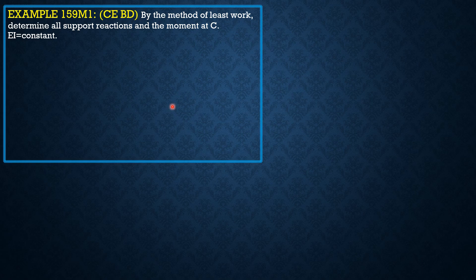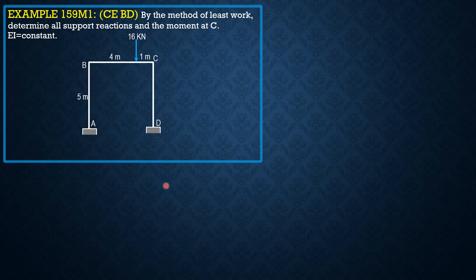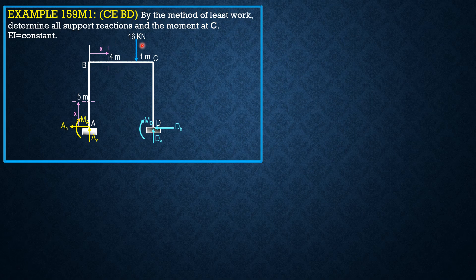This is the given figure. The structure is indeterminate to the third degree, so we select the redundant forces at A — the reactions shown — and we also place the reactions at D. Then we define four sections: first, second, third, and fourth.